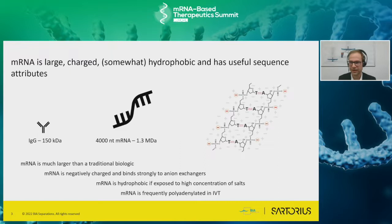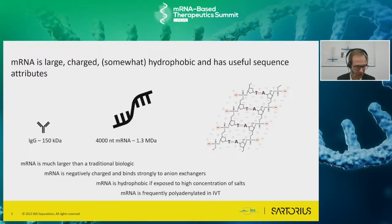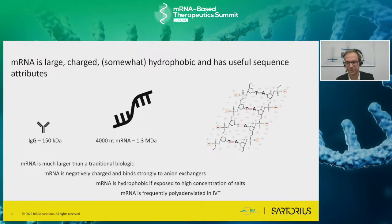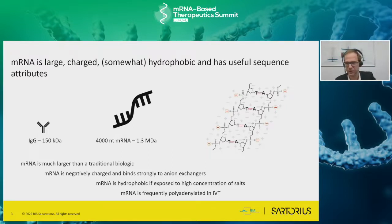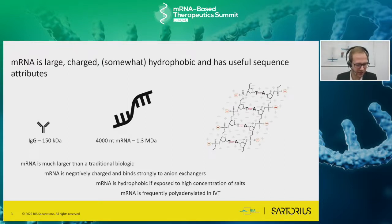mRNA is large, but there are tools that can tackle this size and in fact the size becomes an advantage to some extent. mRNA is highly charged - negatively charged - which can be taken as an advantage. There's also a strong hydrophobic component to mRNA which we can use for purification. And there are very useful sequence attributes - I'll focus mostly on the poly-adenine tail from the point of view of purification, though sequence design ongoing for other purposes within mRNA is really quite fantastic.